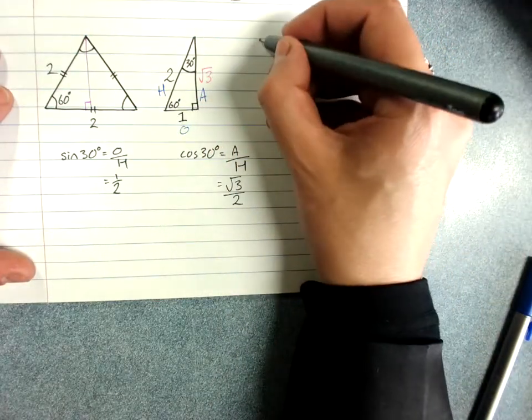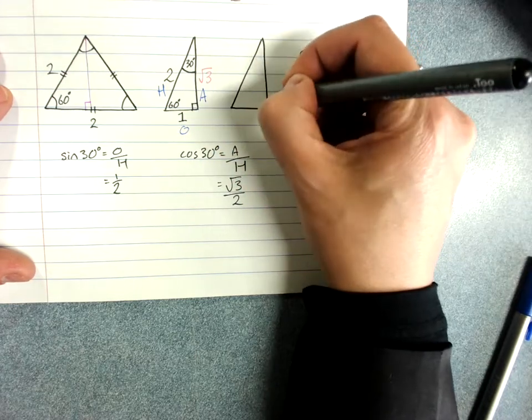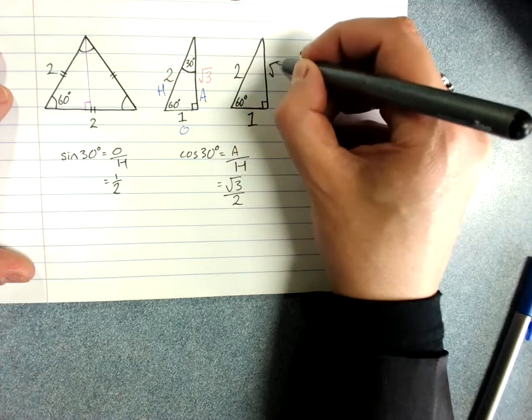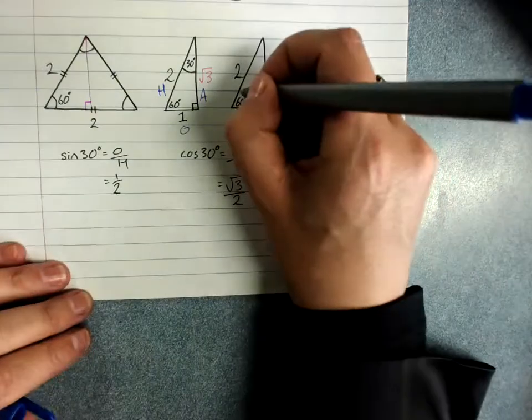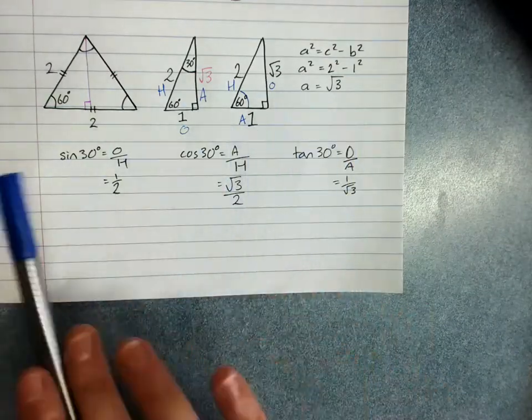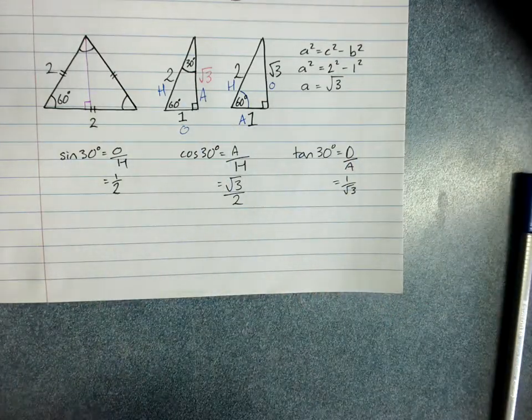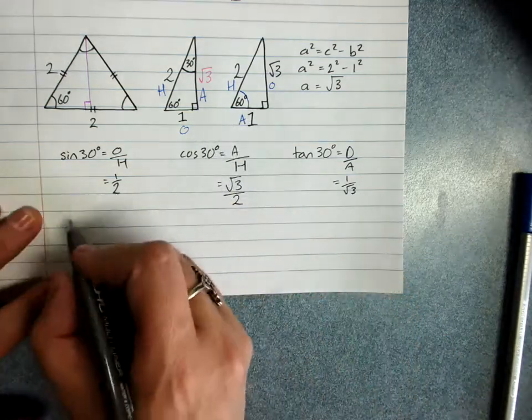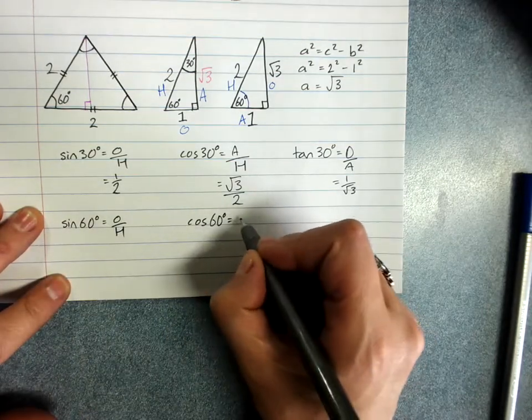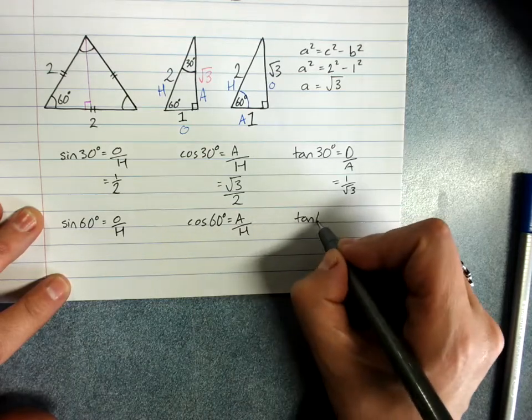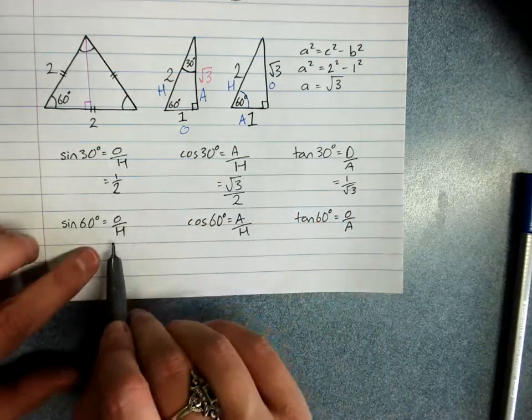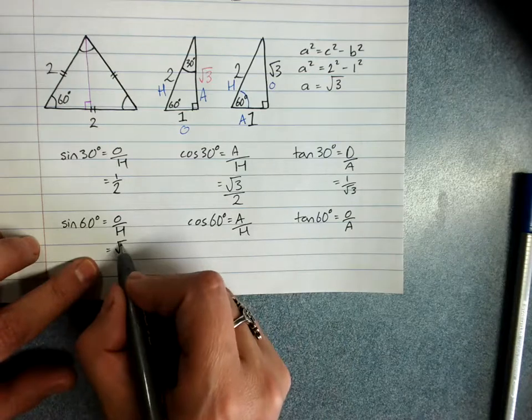If I redraw that just so we can label it for 60 degrees. Now I've got opposite, adjacent, and hypotenuse. This shows you how closely cos and sine are related. I want sine of 60 degrees. I want cos of 60 degrees. Opposite over hypotenuse, root 3 over 2.